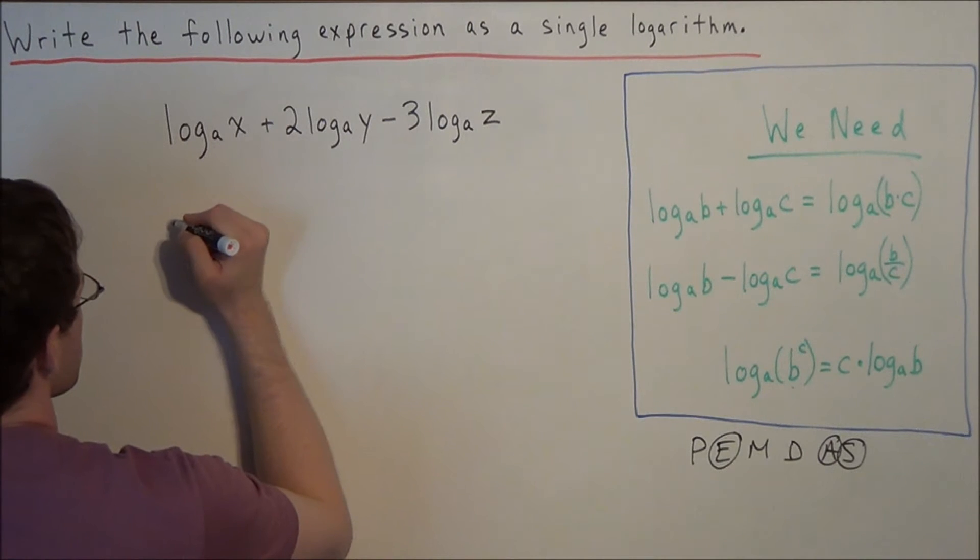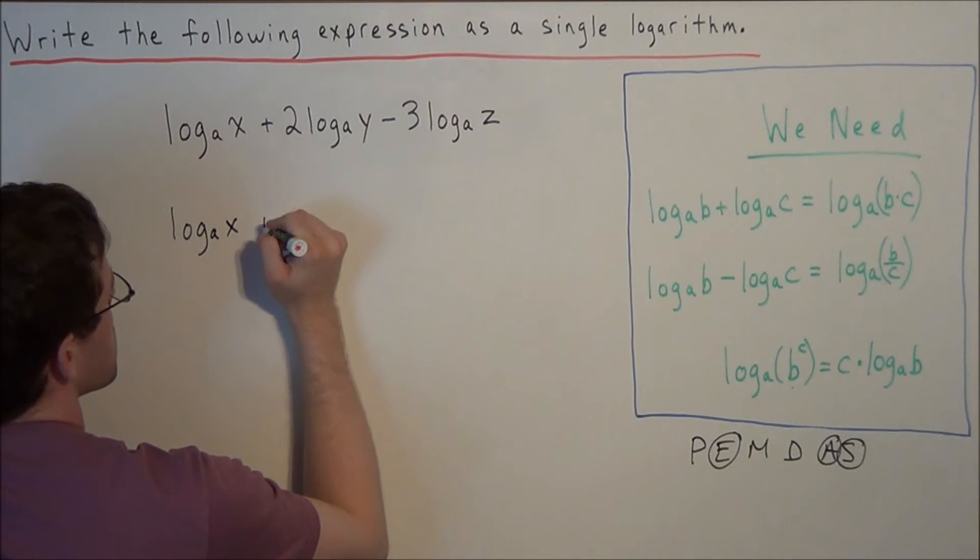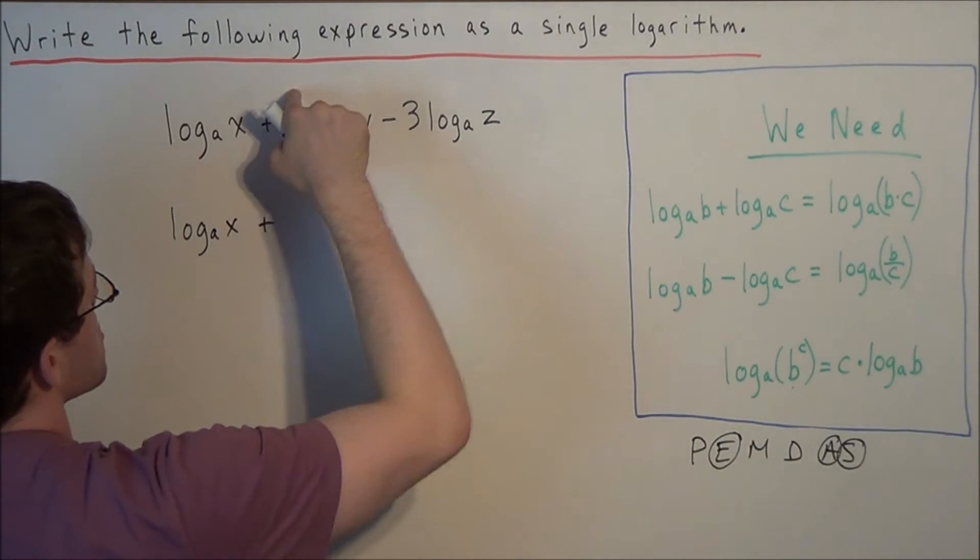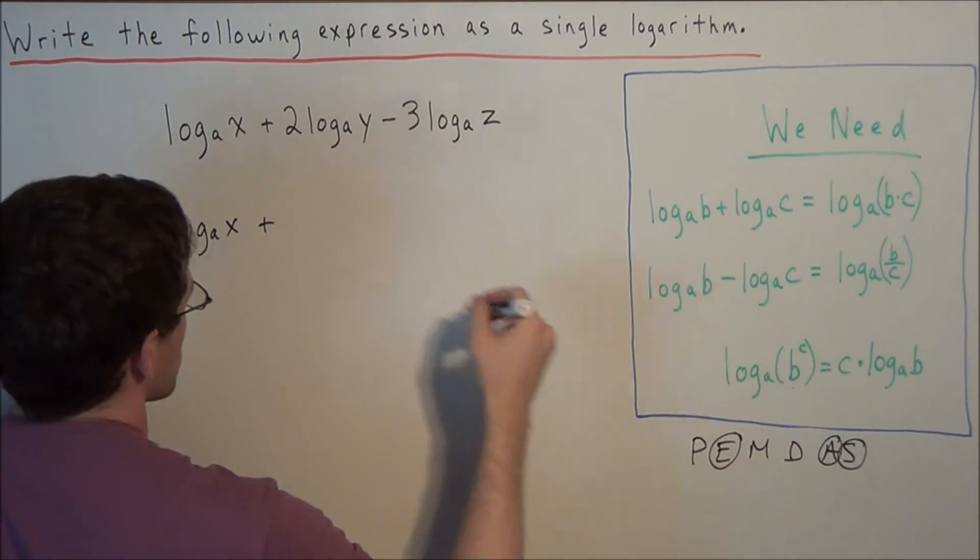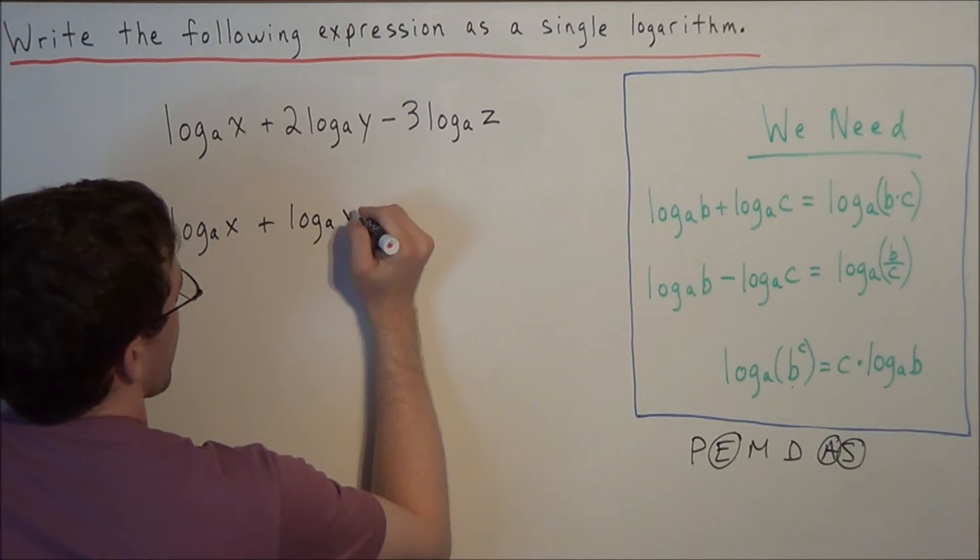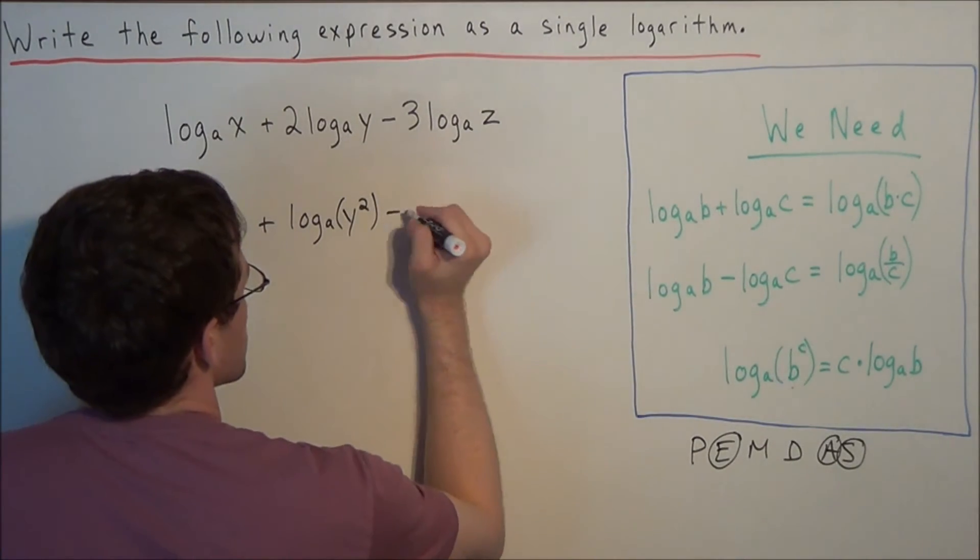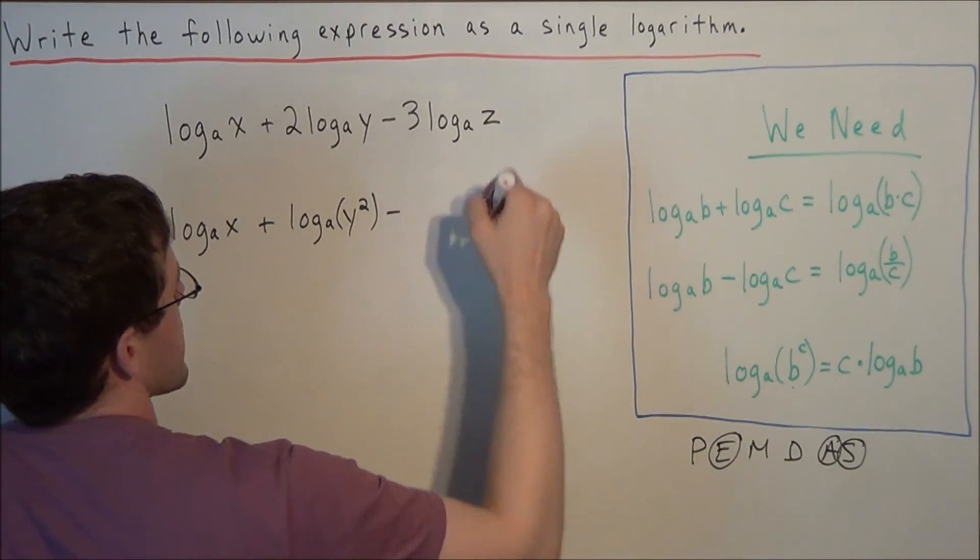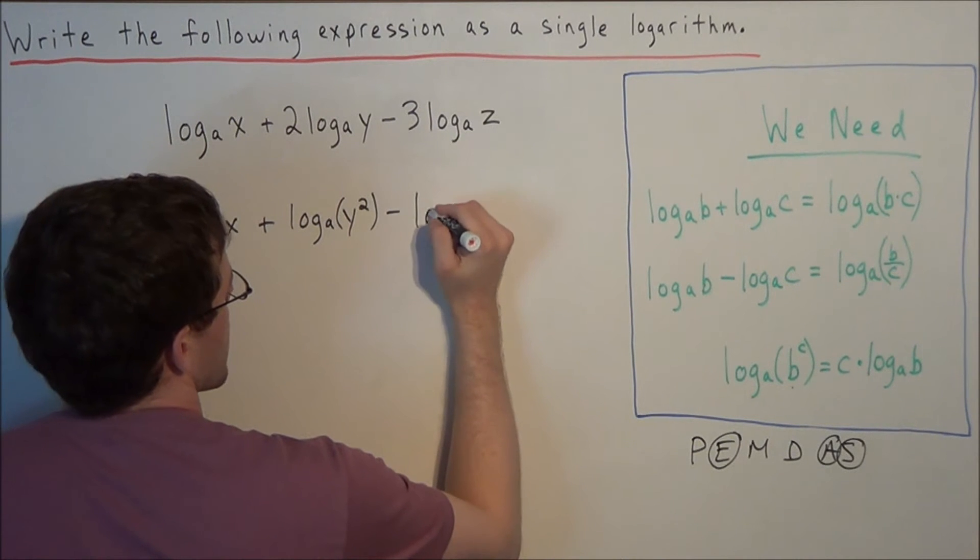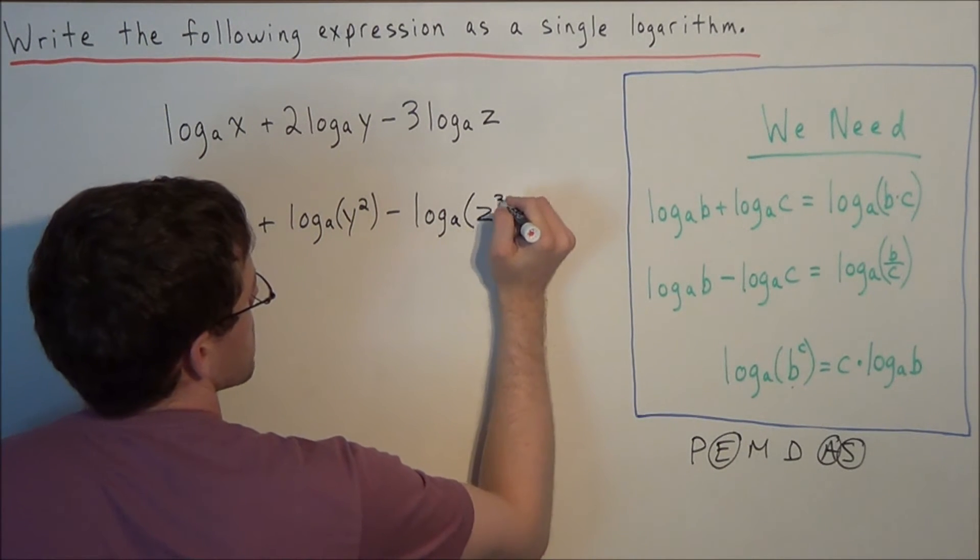So we're going to rewrite the first piece. We have log base a of x plus, and now we want to send this 2 back in using the exponent log property. So we have log base a of y to the second power. And now we have minus, we're going to send this 3 back in as an exponent of z. So we have log base a of z to the third power.